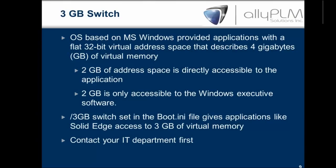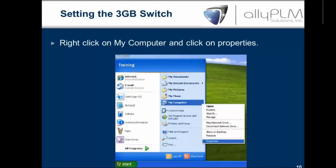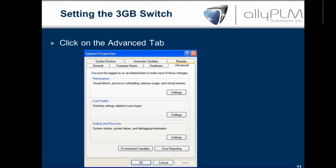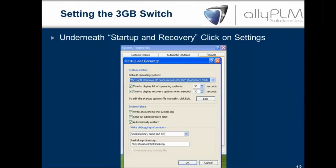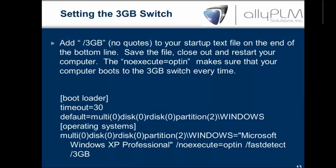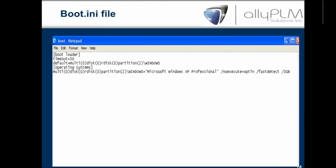You'll want to contact your IT department first when doing this because they'll probably want to do it for you, as you have to be an administrator on your machine. On Windows XP, go to My Computer, click Properties, click the Advanced tab, and underneath Startup and Recovery click Settings. You'll add /3GB to your boot.ini file. You'll see a long string under Operating Systems and at the end you simply add /3GB, then save, reboot, and you'll be operating with the 3GB switch.